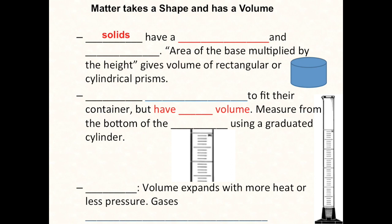Solids have a fixed shape. Fixed means unchanging and a fixed volume. They don't change their shape or their volume. To find the volume of a regular solid, you could take the area of the base, a circular base in this case, and multiply it by the height. That gives the volume of a cylindrical prism. Or for a rectangular prism, you could find the area of the base and multiply that by the height too.